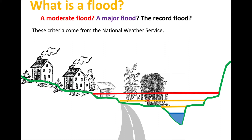However, once we get up to the level at which some structures are inundated, roads are inundated, and there might start to be some evacuations, then the National Weather Service would call this a moderate flood. At this point, we have real damage beginning — there is some damage at lower levels, but more significant damage once we get to a moderate flood.